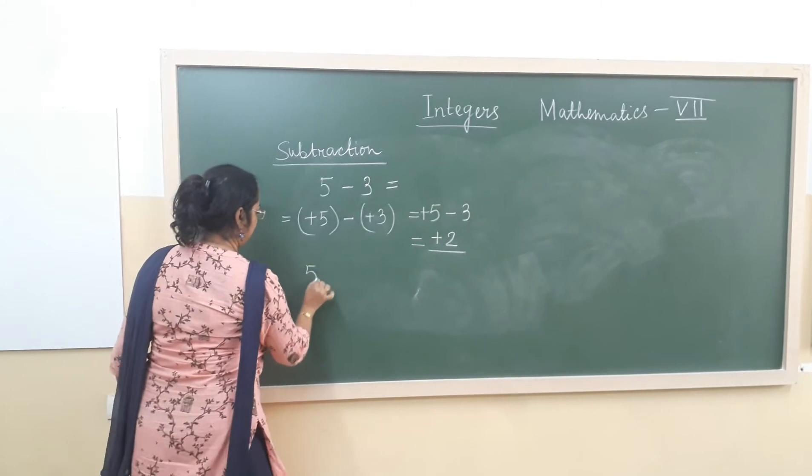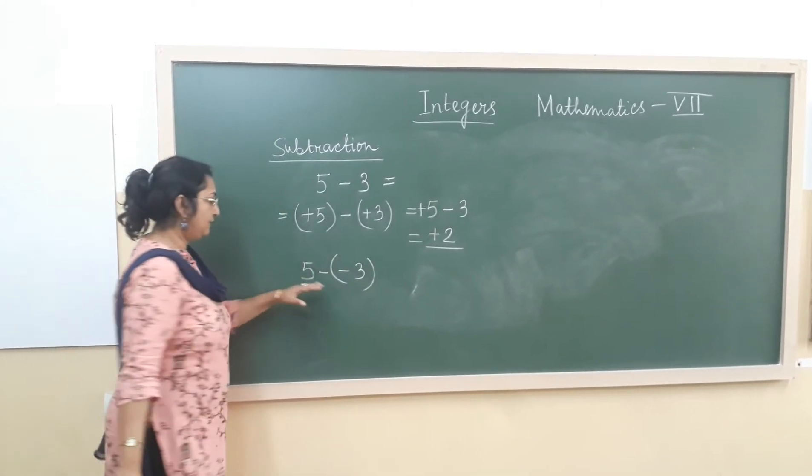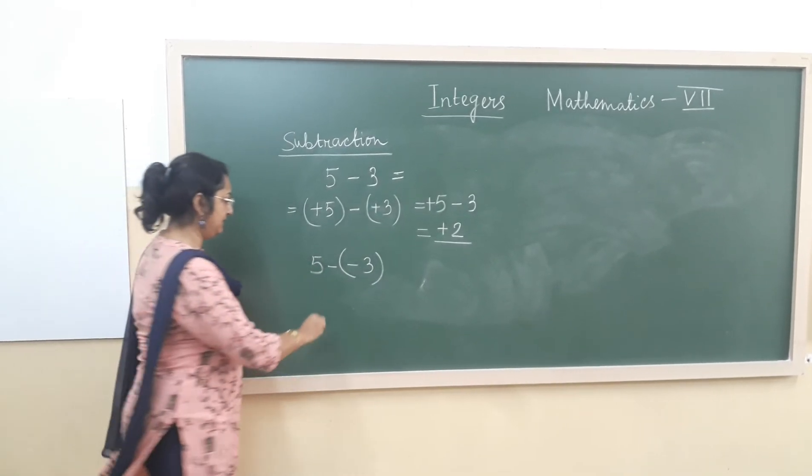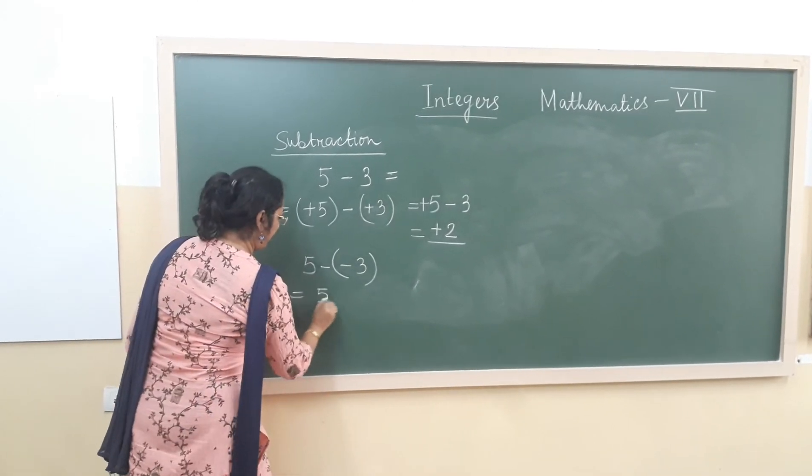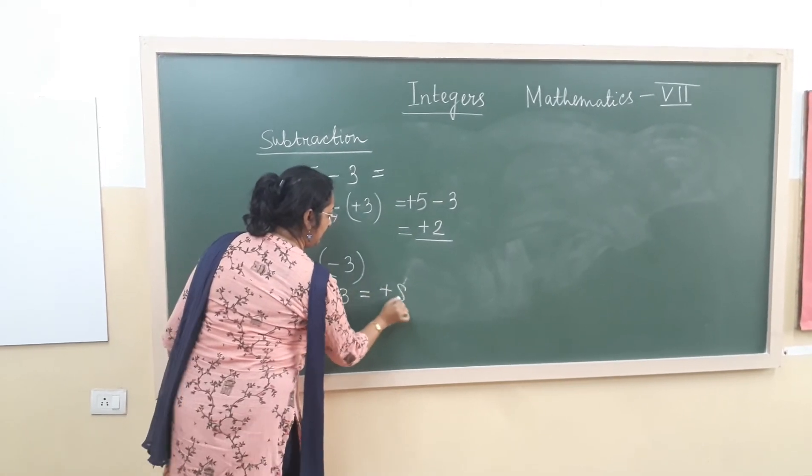Now we have subtracting minus 3 from plus 5. So what will happen? We have to change the sign in subtraction. So 5 plus 3. The answer will be plus 8.